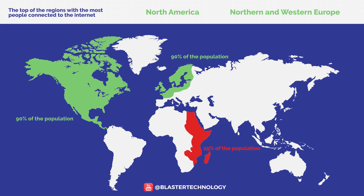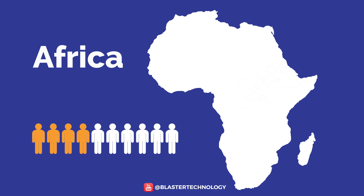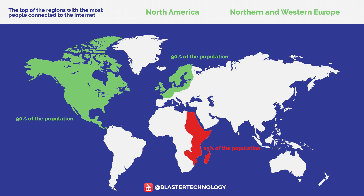At the opposite pole is East Africa with about 25%. Specifically, in the entire territory of Africa, about 4 out of every 10 people have access to the internet. Also at the bottom of this ranking is South Asia with a percentage of only 42% of people connected to the internet.